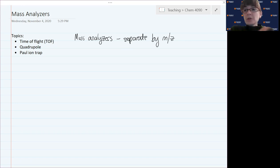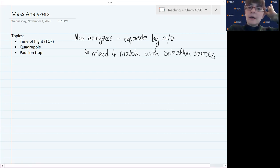Fortunately, we have many choices, and when designing an instrument, the mass analyzers can actually be mixed and matched with different ionization sources in order to make an instrument that really works for your analyte and sample type.